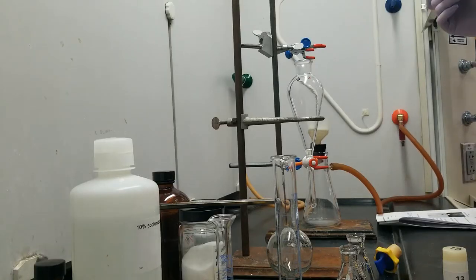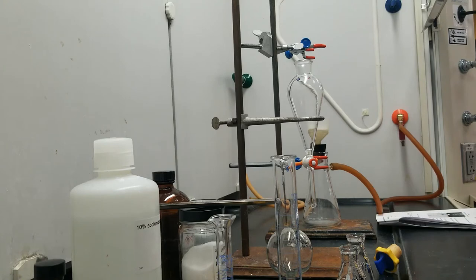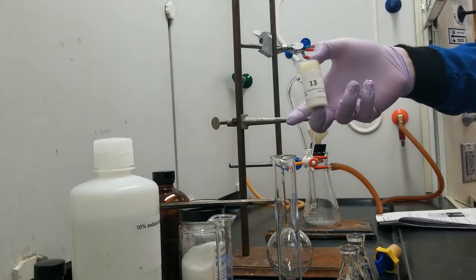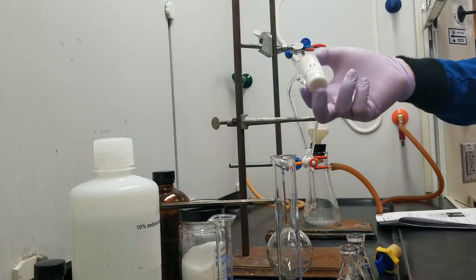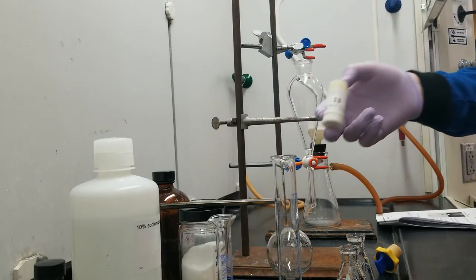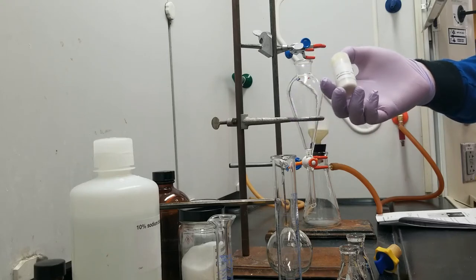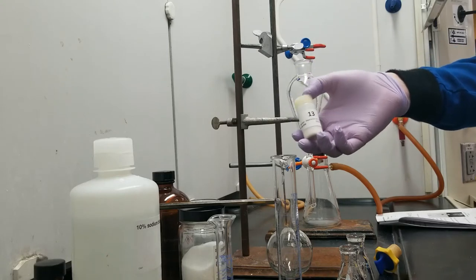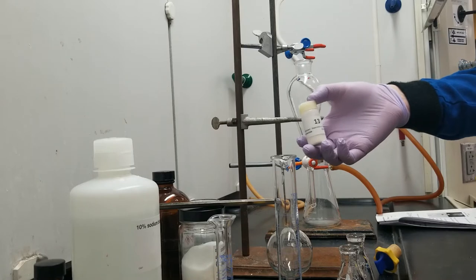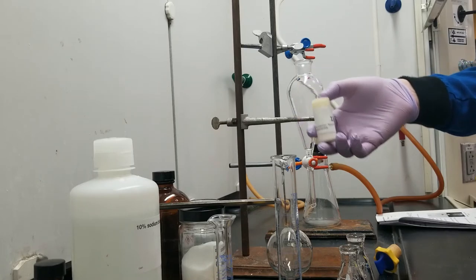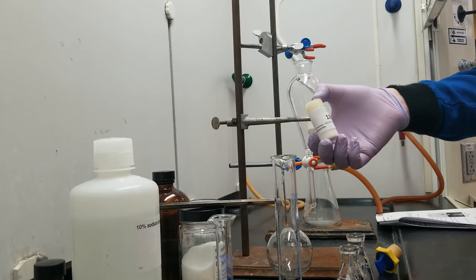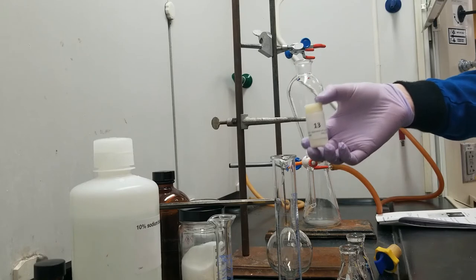Welcome back everyone. So today we're going to be doing a two-component extraction. Let's start by introducing our unknown. I chose number 13 because my birthday is on the 13th. So within this unknown is a combination of two different compounds: acetanilide and 3-chlorobenzoic acid.